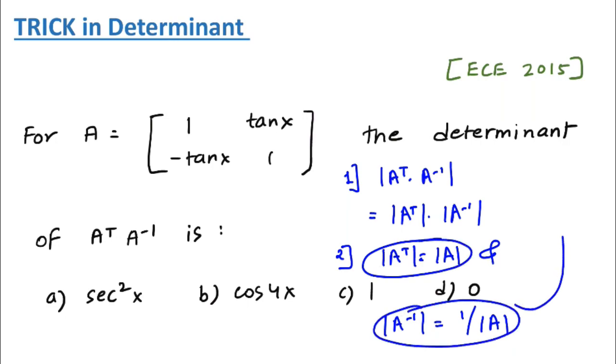So apply all this concept, all this trick, in this expression. Now your expression is changed to determinant of A into one over determinant of A. So this is cancelled out. The answer is 1. And you can see option c is correct, as simple as that. Without using pen and paper you can get the answer, and this was an actual GATE question asked in the recent telecom paper.